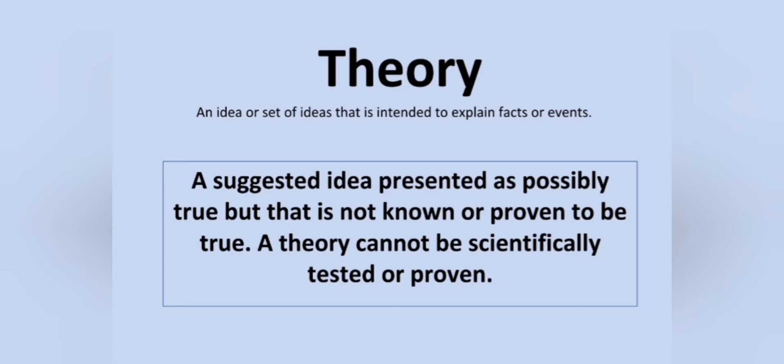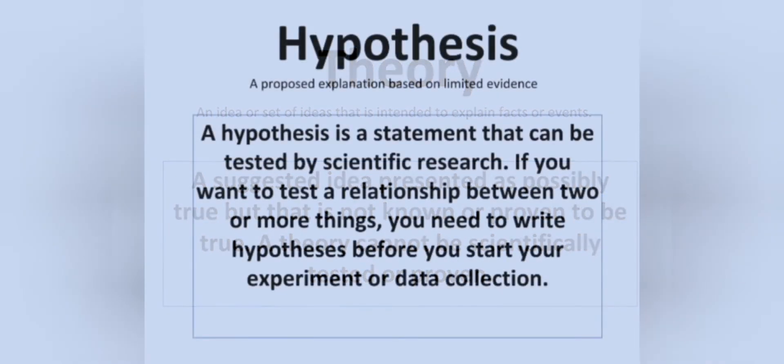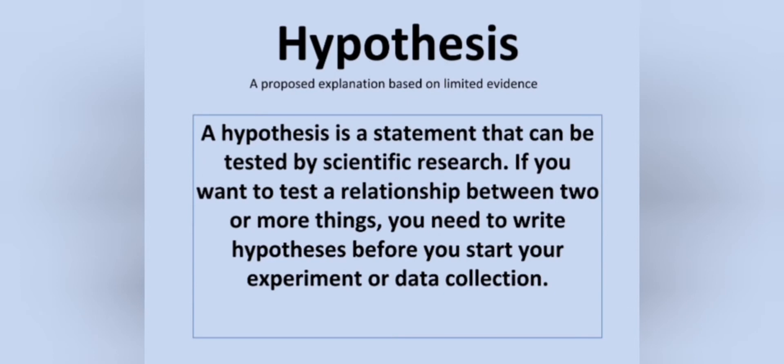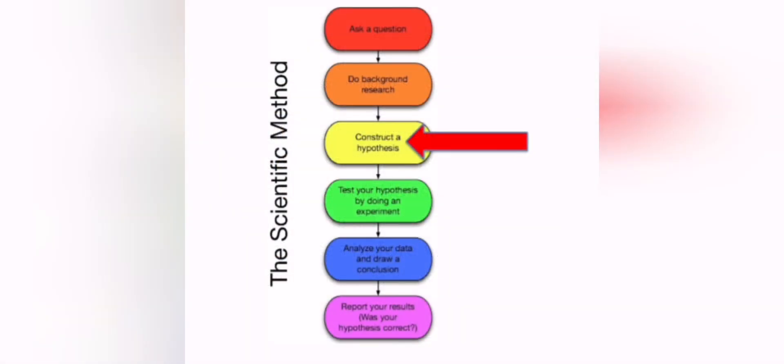This is where a hypothesis comes in. A hypothesis is a statement that can be tested by scientific research. If you want to test the relationship between two or more things, you write a hypothesis and then do an experiment to collect data to explain what you've seen. We learn and practice this every time we do an experiment — perhaps the scientific method looks familiar.